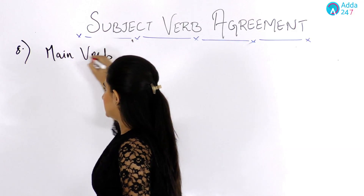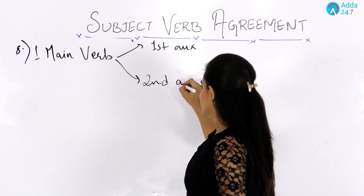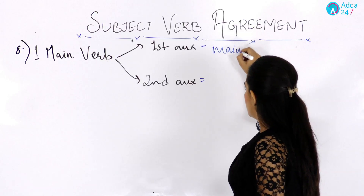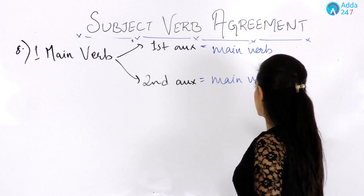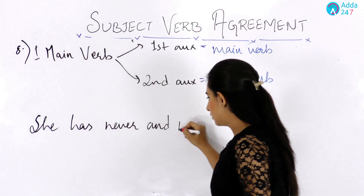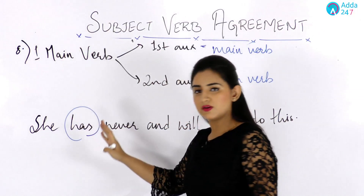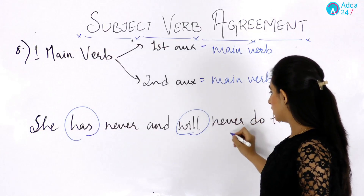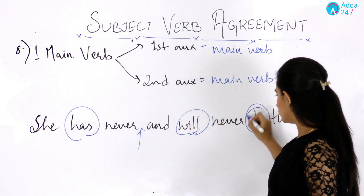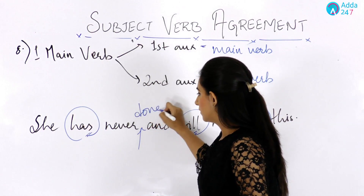The last rule: if a sentence has a single main verb and two auxiliaries, the main verb is used with each auxiliary according to its tense. For example, 'She has never and will never do this' — we have two auxiliaries: 'has' and 'will'. Since 'has' uses the third form of the verb, the correct sentence is: 'She has never done and will never do this'.